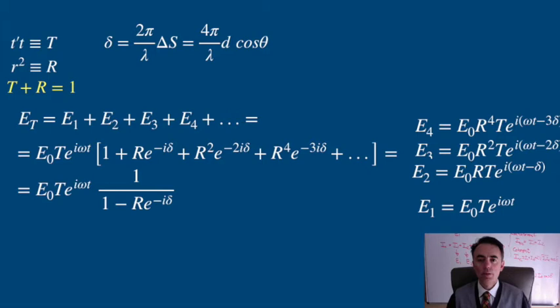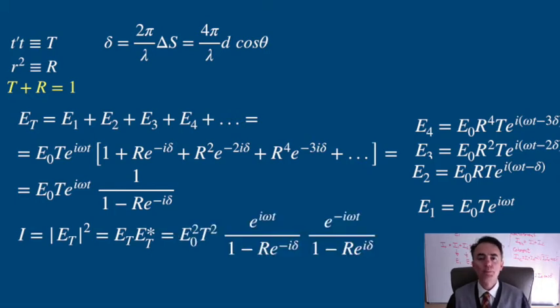The total irradiance is the square of the electric field. Because we are using complex notation, this will have to be E times its complex conjugate E star, for which we change the sign of the imaginary terms.